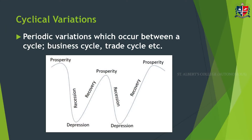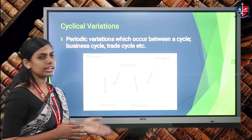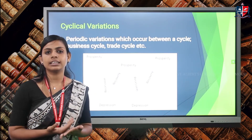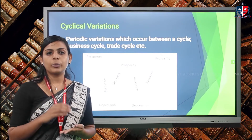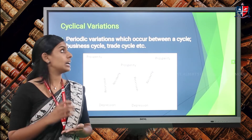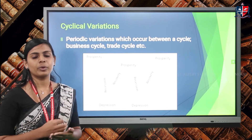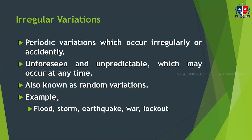The third component is cyclic variation. In commerce we mainly deal with two cycles: the trade cycle and the business cycle. In a business cycle there are four phases — prosperity, recession, depression, and recovery — and similarly in the trade cycle there are different stages. Variations occurring within a cycle come under this third component, cyclic variation.